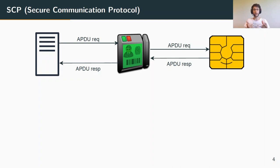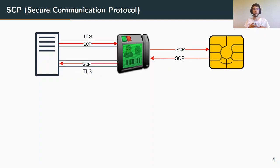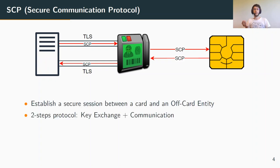All communication goes through a secure channel defined by the secure communication protocol. The goal of such a protocol is to establish a secure communication session between a card and an off-card entity, starting with a key exchange step to ensure that secure cryptographic key material is shared by both the server and the card, which is then used to ensure security in the following communication. There are various versions: SCP-1, 2, and 3, and only SCP-3 is not deprecated today.